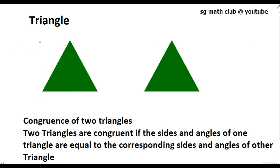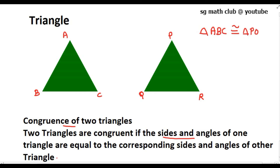In this chapter we are going to study about congruence of two triangles. In simple words, two triangles are congruent if they are of the same shape and size. By definition, two triangles are congruent if the sides and angles of one triangle are equal to the corresponding sides and angles of the other triangle. Suppose ABC is one triangle and PQR is our second triangle — I can say triangle ABC is congruent to triangle PQR. This symbol denotes congruence.